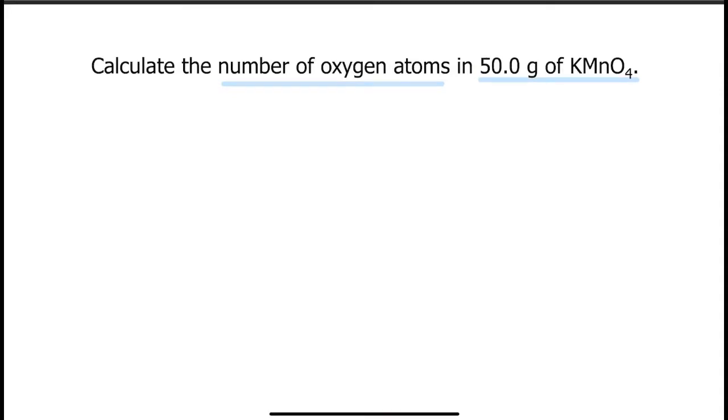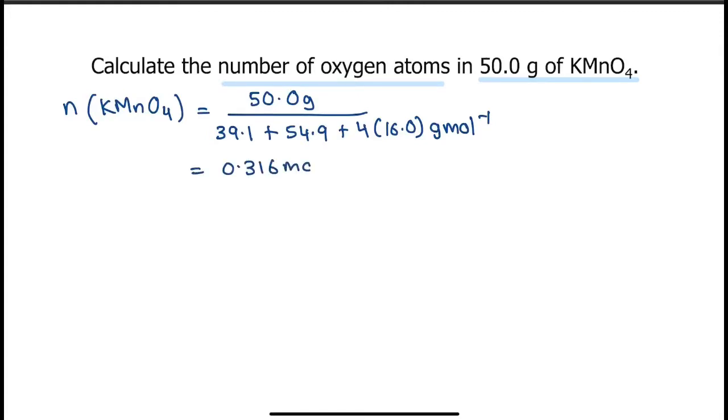As the previous question, begin answering by calculating the number of moles of KMnO4, which would be mass, which is 50 grams divided by the molar mass, which is the sum of 39.1 plus 54.9 plus 4 times 16 gram per mole. This would give you an answer 0.316 mole.